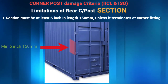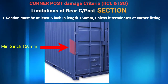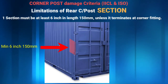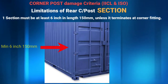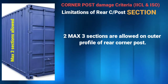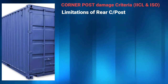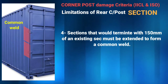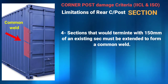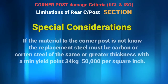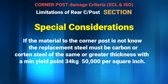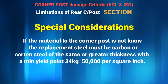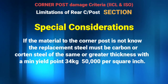Remember, sections are not allowed except for the rear corner post outer profile. Limitations on rear corner post sections: 1. A section must be at least 6 inches (150 mm) in length unless it terminates at a corner fitting. 2. A maximum of 3 sections are allowed on the outer profile of a rear corner post. 3. Sections must be fitted flush and butt welded. 4. Sections that would terminate within 150 mm of an existing section must be extended to form a common weld. Special consideration: if the material of the corner post is not known, the replacement steel must be carbon steel of the same or greater thickness with a minimum yield point of 34 kg/mm² (50,000 psi).